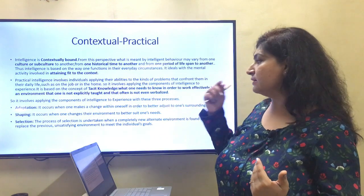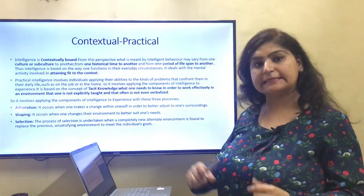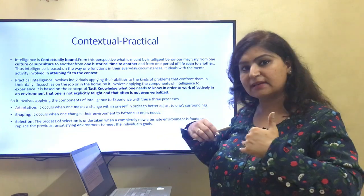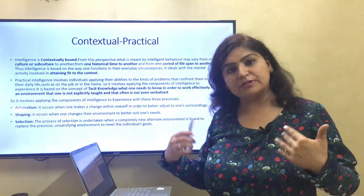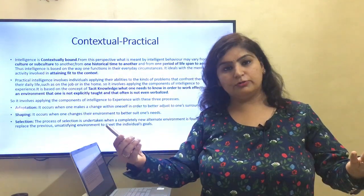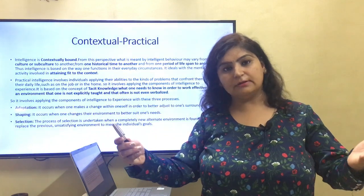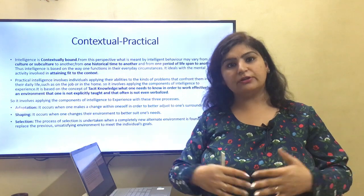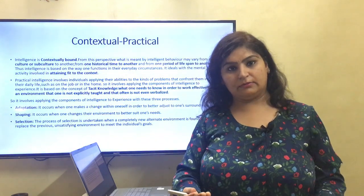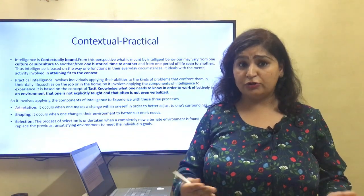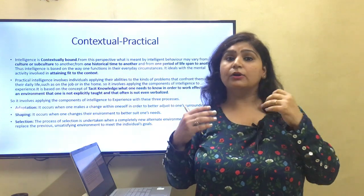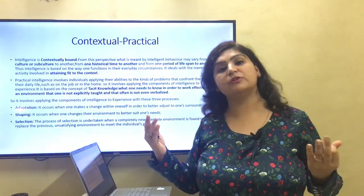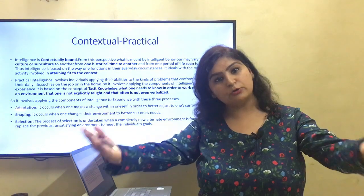Contextual practical intelligence has three parts: adaptation, shaping, and selection. Adaptation occurs when one makes changes within oneself in order to better adjust to one's surroundings. For example, you got a new job — you go there and adapt to the environment because you have to apply your abilities to your job. If there is some skill required to learn in order to adapt, you learn that.